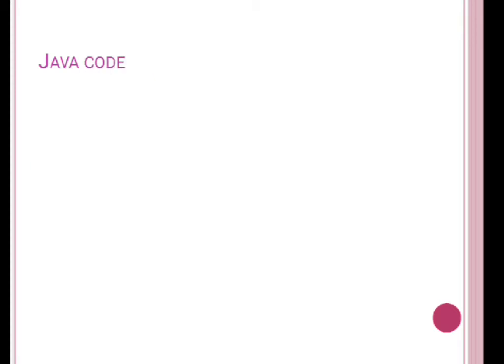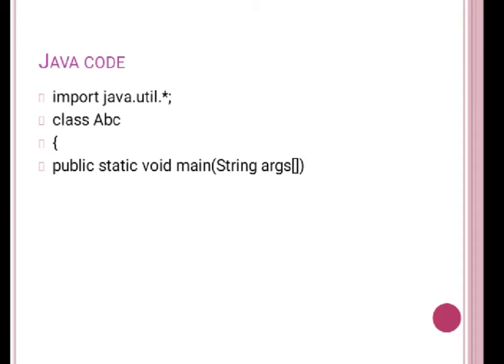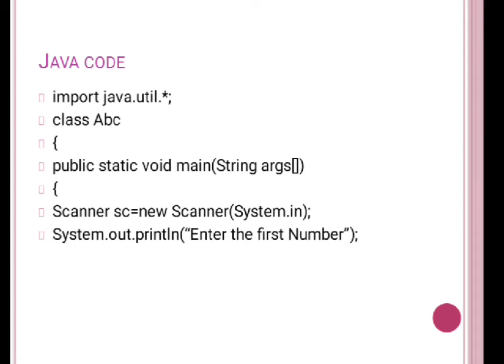To implement this, since we are taking input from the keyboard, we use the Scanner class. First, import the util package, then write the class name — I have chosen 'abc', you can choose any appropriate name. After that, write the main method: public static void main(String[] args). Then create a Scanner class object: Scanner sc = new Scanner(System.in).